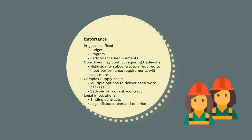Construction projects have a fixed budget, program and performance requirements. They are competitively tendered between multiple general contractors, and the winner always has low margins and a tight program to achieve. Getting procurement right is critical to ensuring the project can be delivered within these constraints and the head contractor makes money. We need to competitively procure work but also need to be choosing subcontractors who can do the work on time and to the required quality standards. If we select a subcontractor who has a low price, we may suffer delays or poor quality of works. Conversely, we may not have the budget to use a high quality subcontractor. Program, budget and quality objectives need to be carefully balanced to ensure we get the best possible outcome.